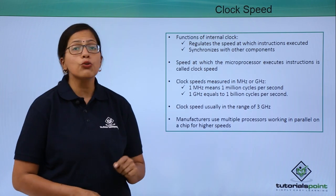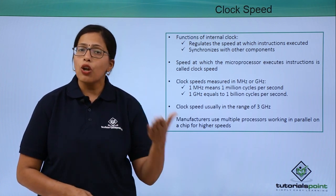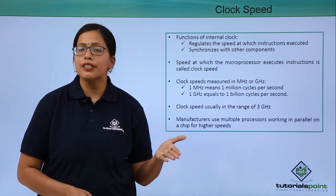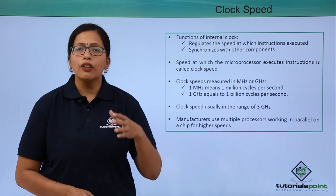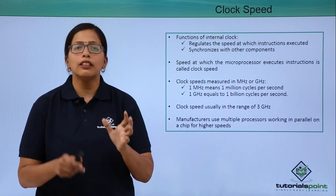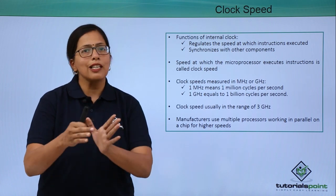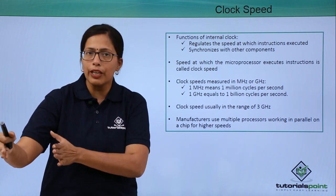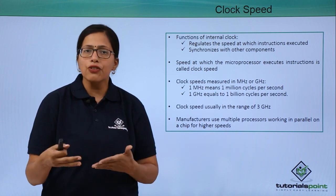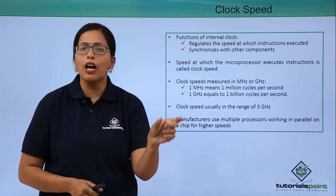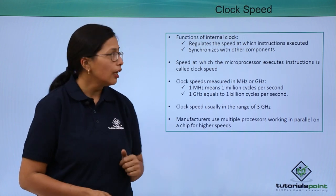Clock speed is usually in the range of 3 gigahertz. If the clock is designed for more than 3 gigahertz, it will get so hot that the processor will stop working. So after this speed, there has been no development in the speed of the microprocessor. Instead, manufacturers are putting more than one microprocessor on their chip to increase the speed.